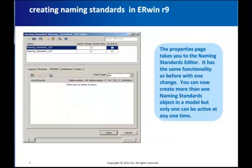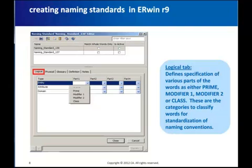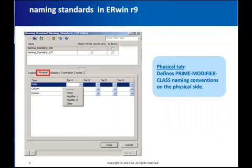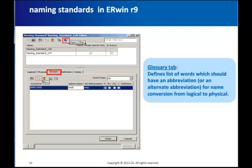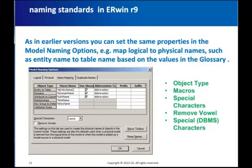The properties editor allows you to add the same properties as have been available in previous versions. The main change is that you can now add more than one naming standards object with distinct options; however, only one can be active at any one time, just as before. In the logical tab you can define whether the words in the glossary are prime, modifier 1, modifier 2, and class. The same applies for the physical side in the physical tab. The glossary tab is where you actually add the words — click on the New tab to add a new word or use the Import button to import from an NSM file.